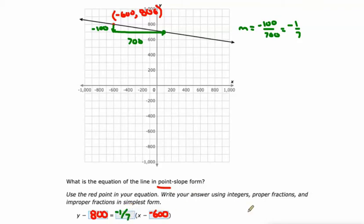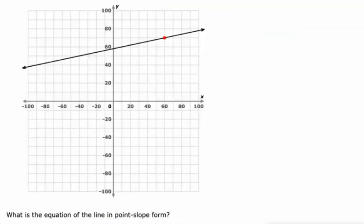And then we have our equation in point slope form: y minus 800 equals negative one seventh times x minus negative 600. Let's try it a few more times.